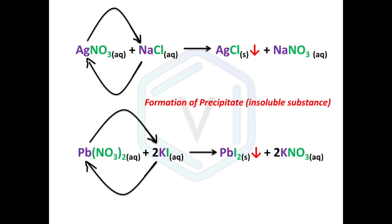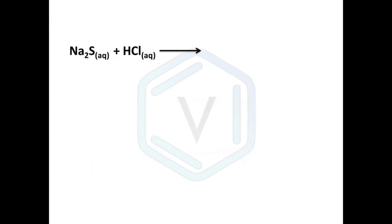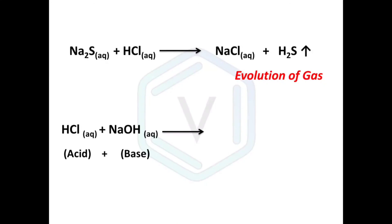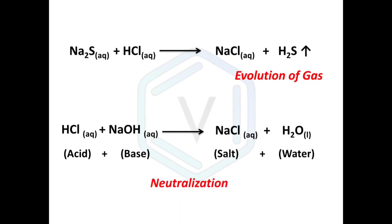Other changes can also occur in double displacement reactions. For example, sodium sulfide reacts with hydrochloric acid to form sodium chloride and hydrogen sulfide gas — this double displacement reaction is accompanied by the evolution of gas. In another example, hydrochloric acid reacts with sodium hydroxide forming sodium chloride and water — this is a neutralization reaction, which is also a form of double displacement reaction.